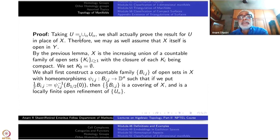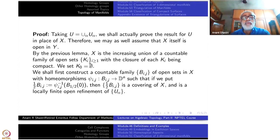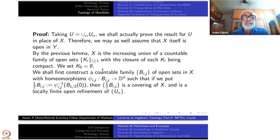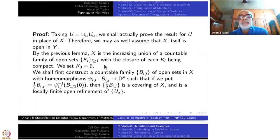Taking U equal to the union of U_α, which contains X, instead of working on X we can work on U and then restrict to X since the functions are defined on the whole of Y. So it is enough to prove the theorem for open subsets of Y. Therefore we may assume X itself is open in Y. By the previous lemma, X is the increasing union of a countable family of open subsets K_i, with the closure of each K_i being compact.